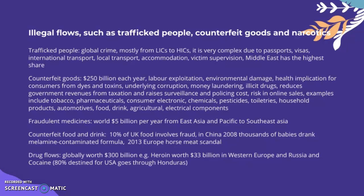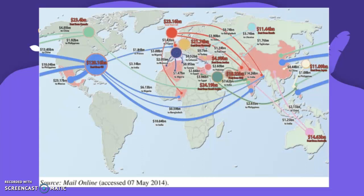Looking at drug flows: globally, drug flows are worth 300 billion dollars. Heroin is worth 33 billion dollars in Western Europe and Russia. For cocaine, 80% is destined for the USA and it goes through Honduras.